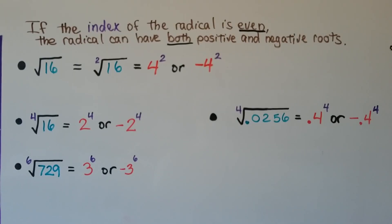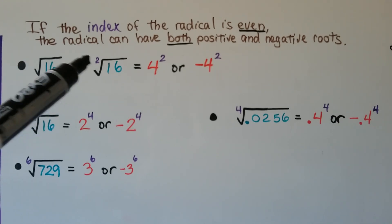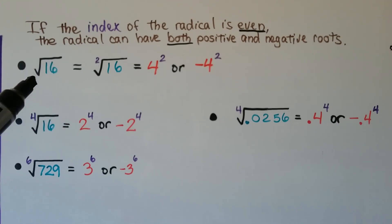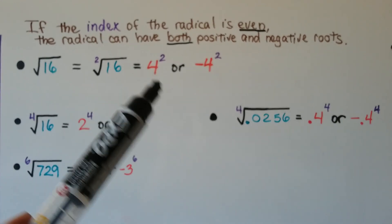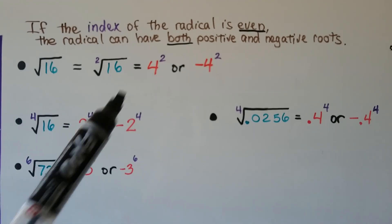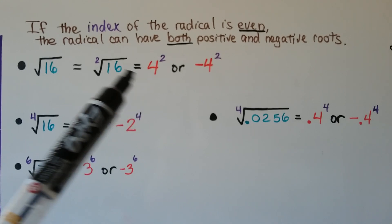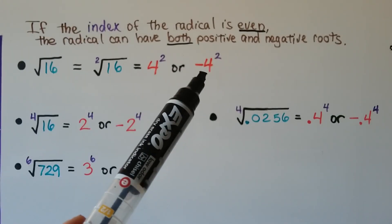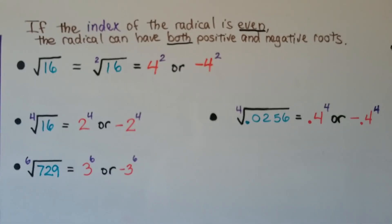If the index of the radical is even, remember the index is that little number up here. If it's even, the radical can have both positive and negative roots. For the square root of 16, we just don't write the little 2, we just leave it empty like this, but we know there's a 2 there. We know the index is 2 for a square root. It would be 4 squared or negative 4 squared, because positive 4 times positive 4 will equal 16, and a negative 4 times negative 4 equals a positive 16.